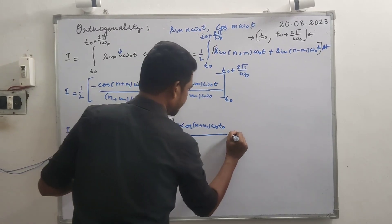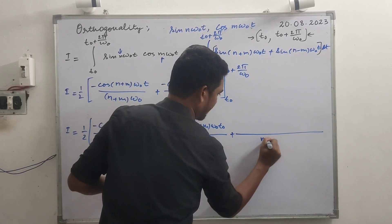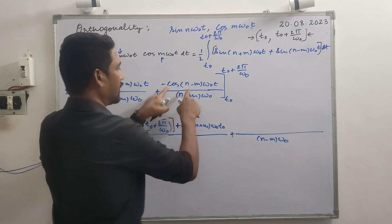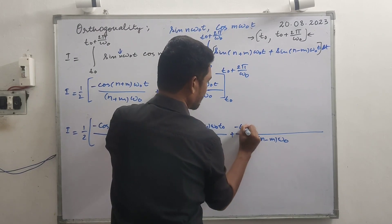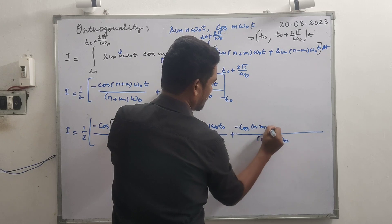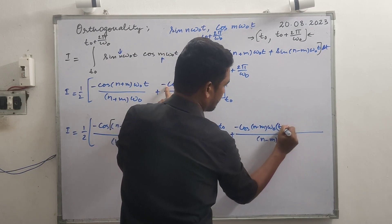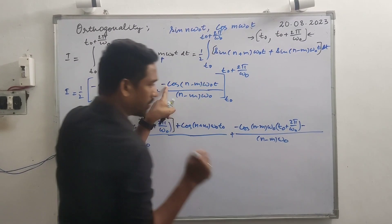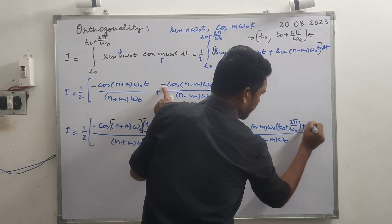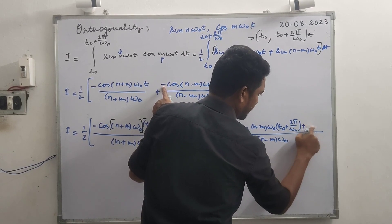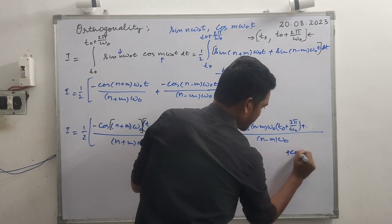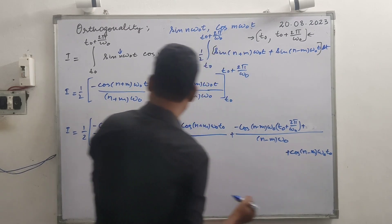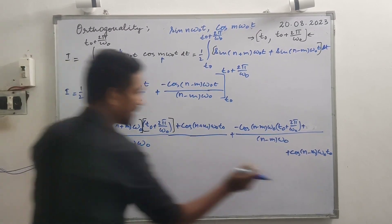For the second term, denominator (n−m)ω₀ stays as is. Substituting the upper limit gives minus cos[(n−m)ω₀(t₀ + 2π/ω₀)], and with the negative of the lower limit becoming positive, we get plus cos[(n−m)ω₀ · t₀].